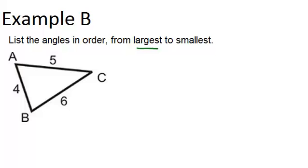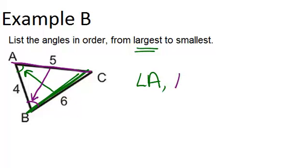So, the largest angle will be across from the longest side. The longest side is 6, so across from that is angle A. So, that means angle A is the largest angle. The medium length angle will be across from the medium length side of 5. So, that means the medium angle is angle B.